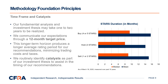So what is our time frame for our investment recommendations? While we would like our investment thesis to be realized soon, we recognize our fundamental analysis and investment thesis may take one or two years to be realized, and therefore we communicate our expectations through a 12-month target price. As you can see in the chart, this longer-term horizon produces a longer average rating period for our recommendations, which can be important as it can minimize trading costs and taxes for our clients. We also routinely identify catalysts as part of our investment thesis to assist in the timing of our recommendations. We not only identify potential catalysts that could validate our investment thesis, but in every stock report we actually include risks that could invalidate our investment thesis as well.